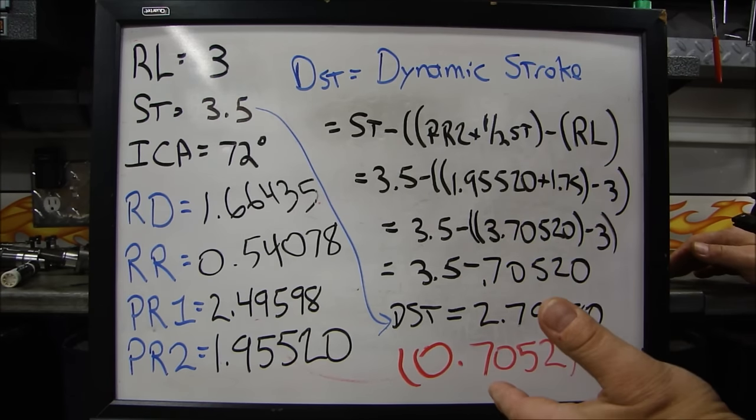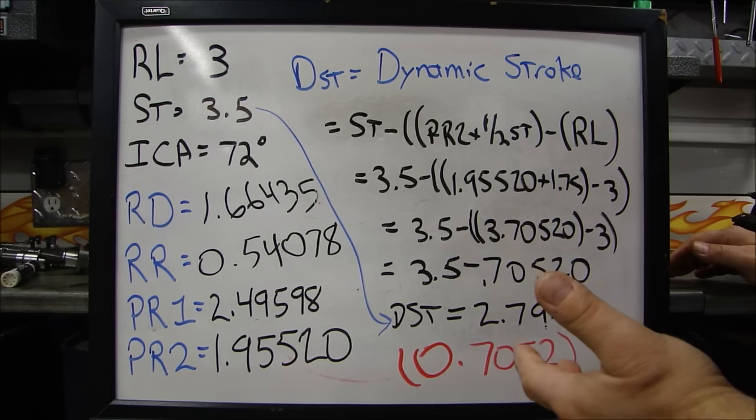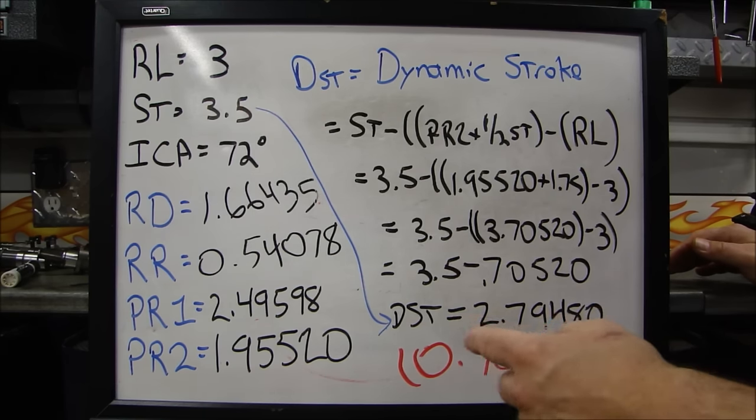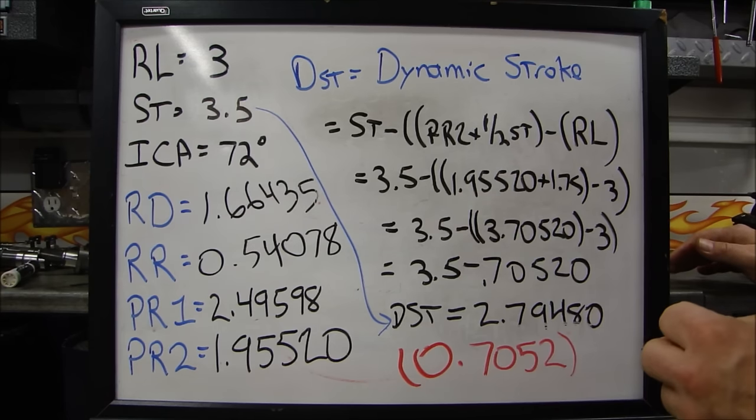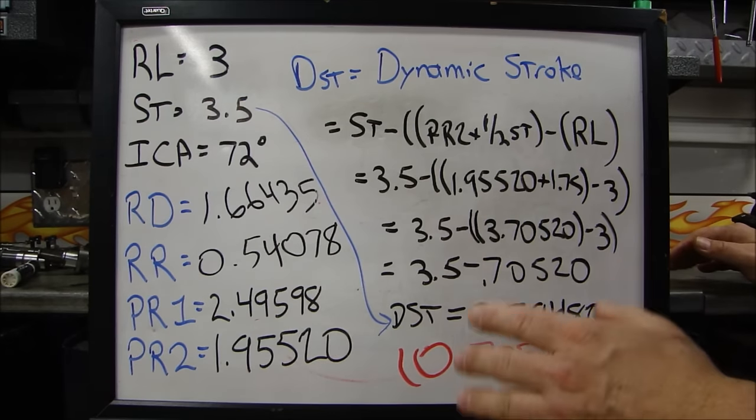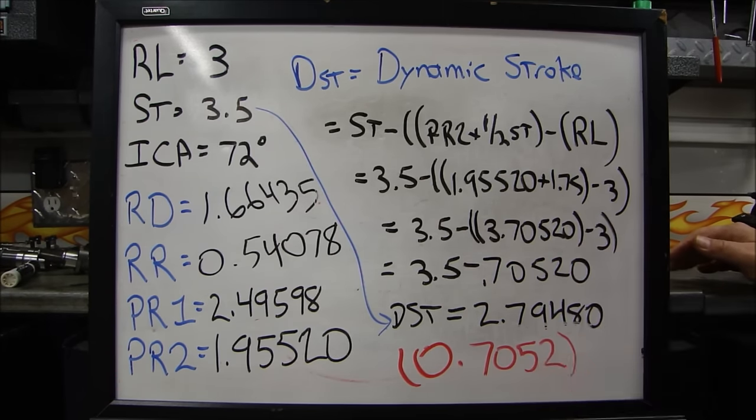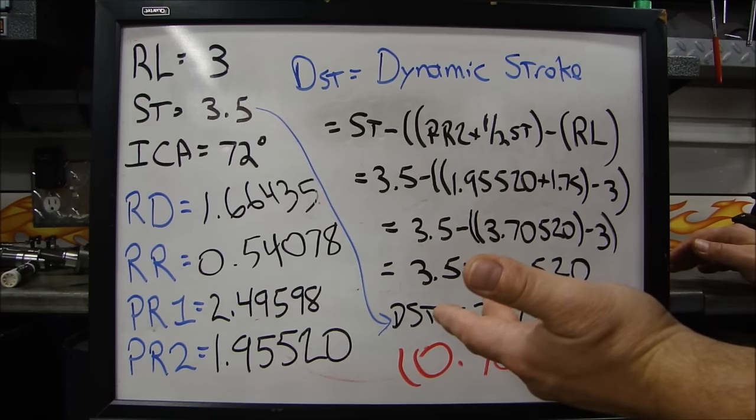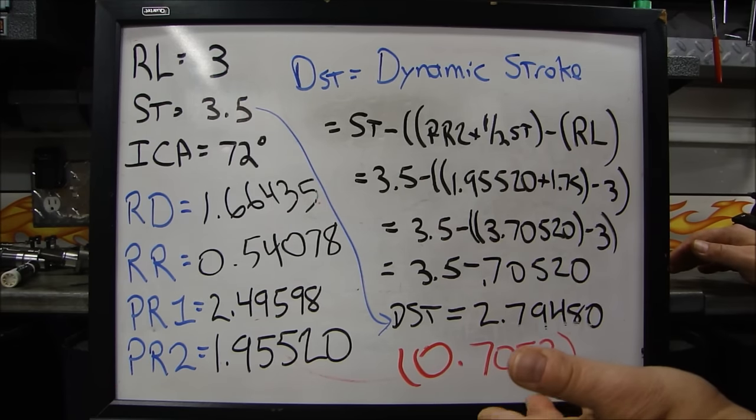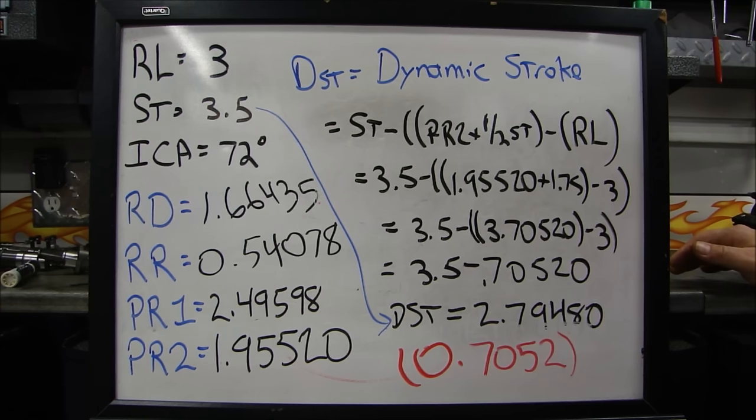And that's important, because when you're choosing your cam, you might do your calculations and say, oh, my compression is going to be 11.5 to 1, and choose all your components around that. When in fact, if your cam has an installed low separation angle, I'm sorry, the installed centerline angle, depending on that, it could lower your dynamic compression considerably. And if that happens, if you drop from 11.5 to 9.5, that's a huge difference in octane requirements. That is why it's important to understand what your dynamic stroke is.